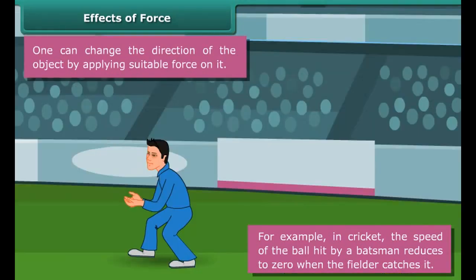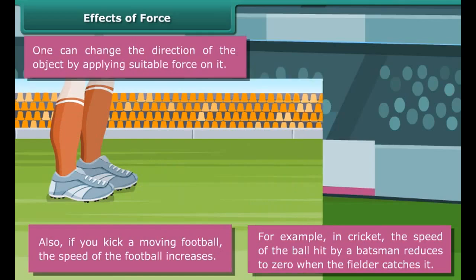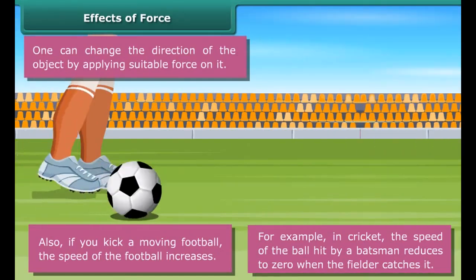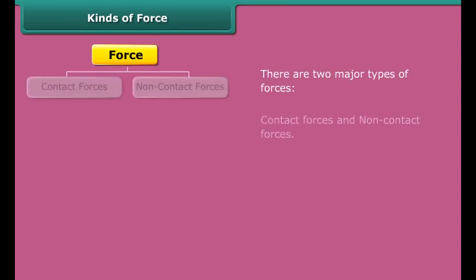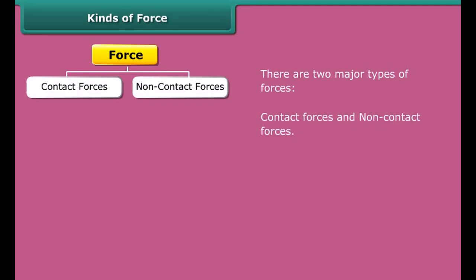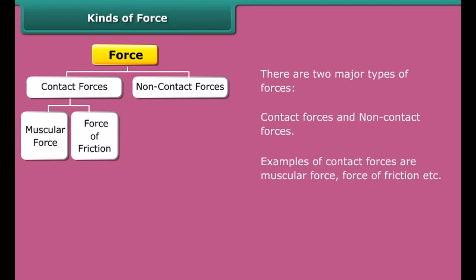Effects of force: One can change the direction of the object by applying suitable force on it. For example, in cricket, the speed of the ball hit by batsman reduces to zero when the fielder catches it. Also, if you kick a moving football, the speed of the football increases. Kinds of force: There are two major types of forces - contact forces and non-contact forces.